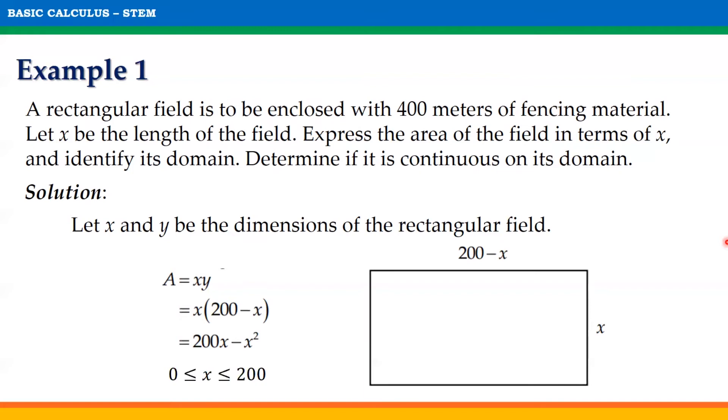And since x and 200 minus x represents the dimensions of a rectangle, the value of the variable x cannot be a negative number nor greater than 200. Thus, the domain of the function is the closed interval [0,200].